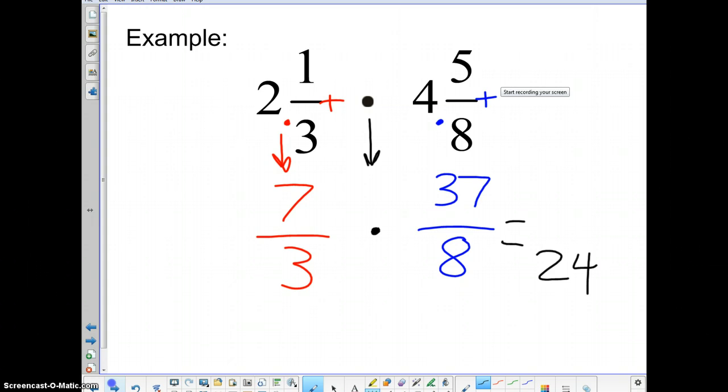Seven times thirty-seven, do that over here on the side. Seven times seven gives us forty-nine. Put the nine down, carry the four. Three times seven is twenty-one, plus the four. Two hundred and fifty-nine. Two hundred and fifty-nine. So, two hundred and fifty-nine over twenty-four.